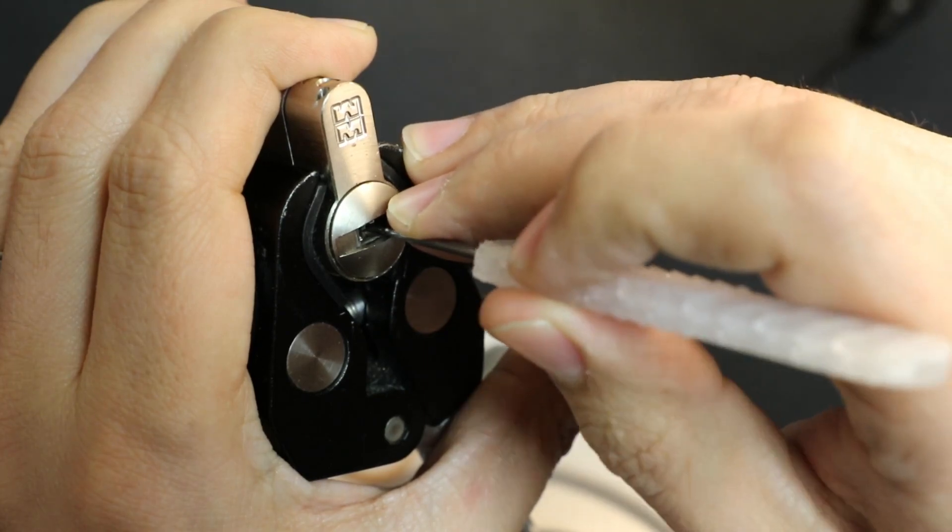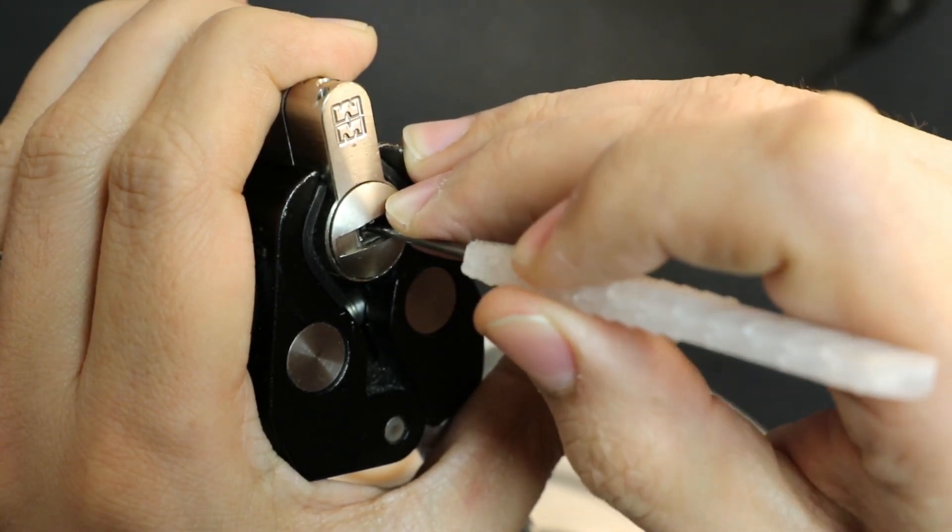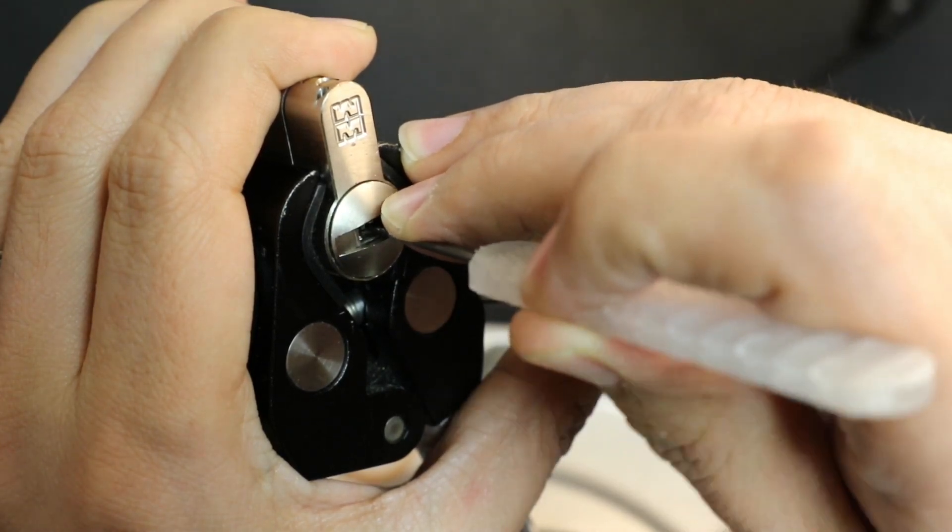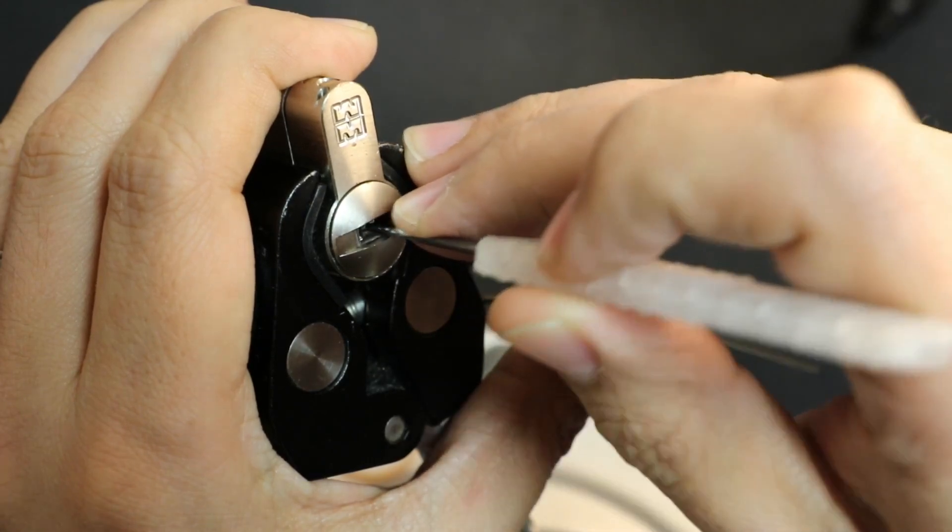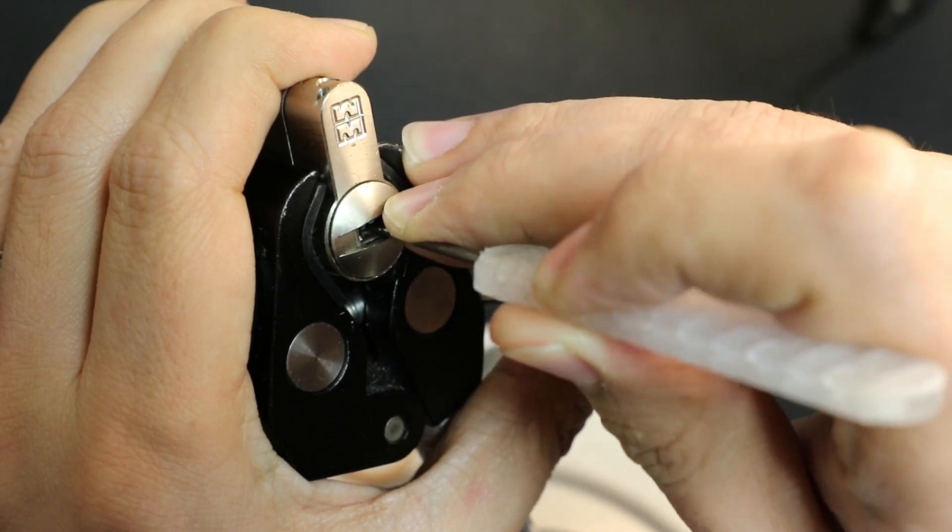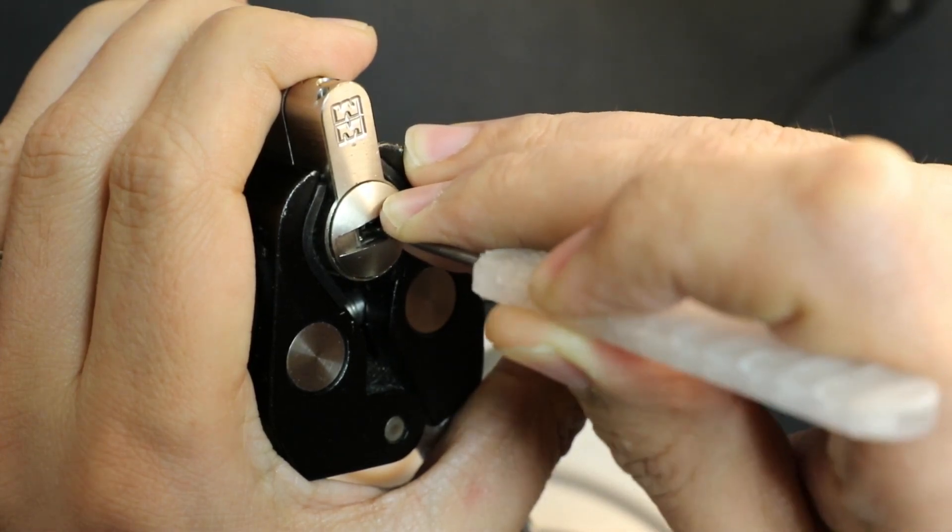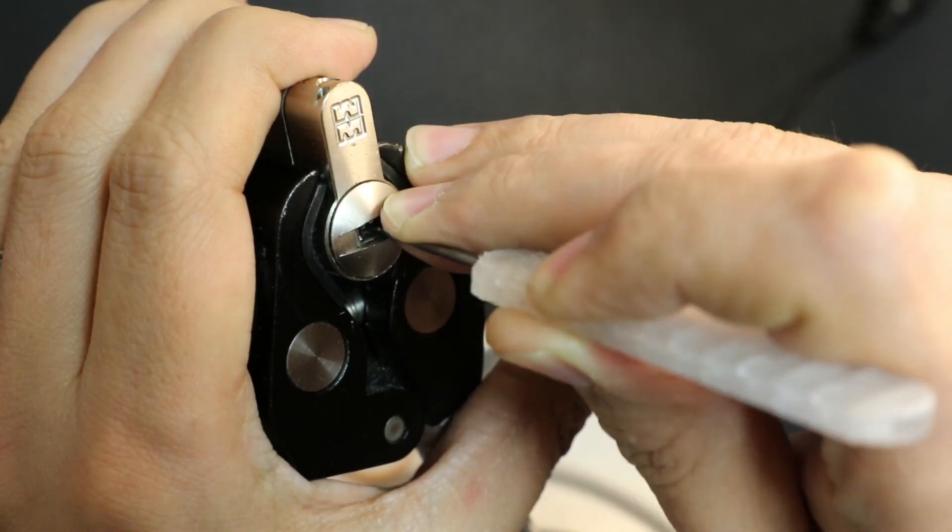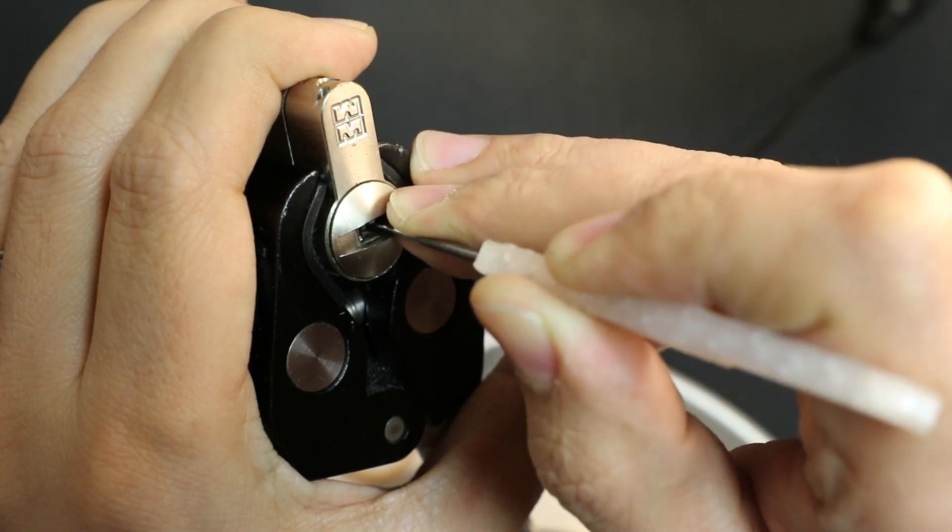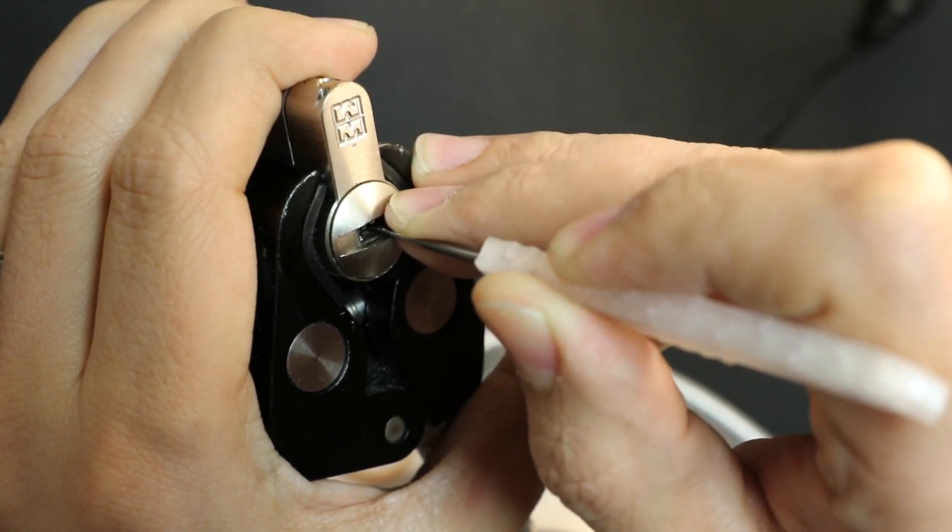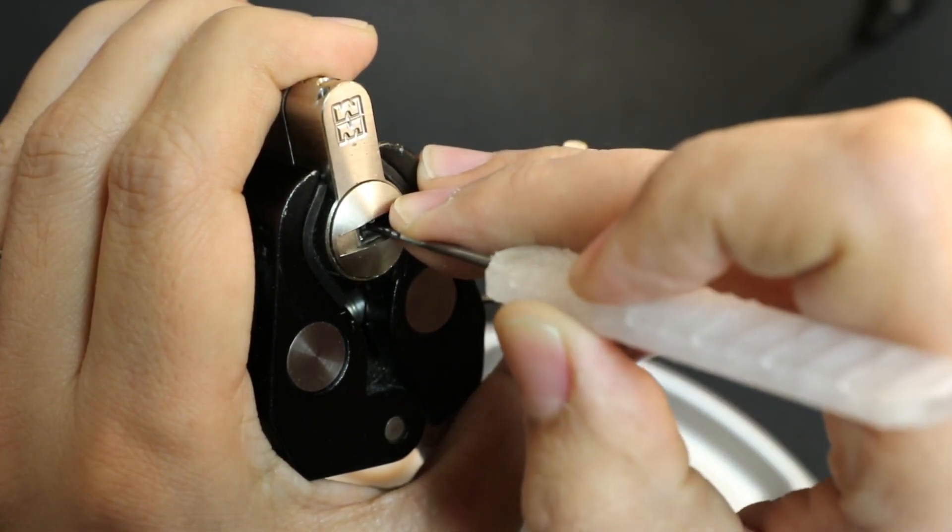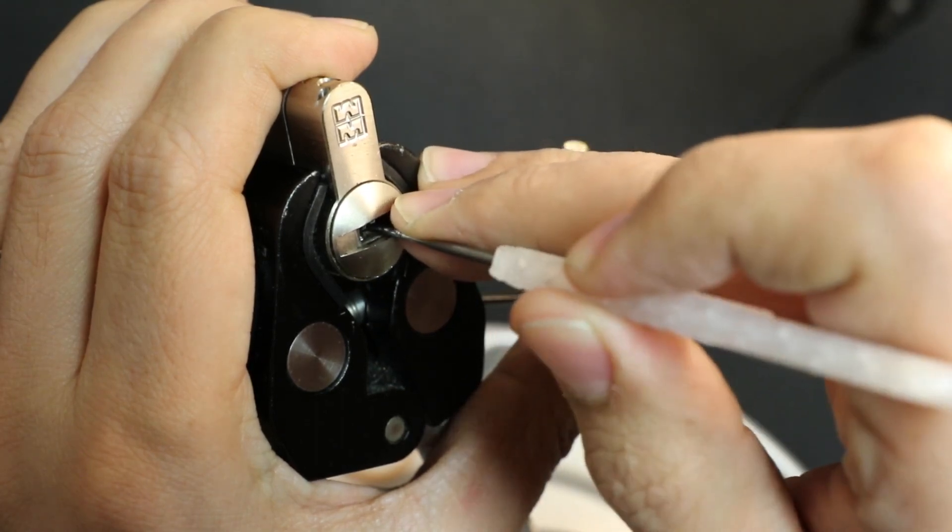Hold on, make sure I'm lifting the right... hopefully I didn't lift the wrong pin. Where is it? This pick, while it can lift higher, it doesn't have the best feedback. I think that's it right there. So it's hard to feel if you're on the pin or not. I clicked there but I didn't feel anything on the tension wrench, so I don't know if that was what I was looking for.